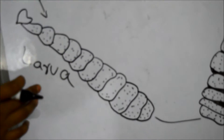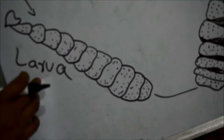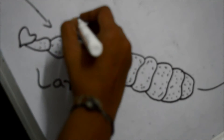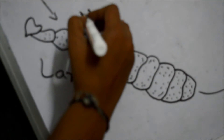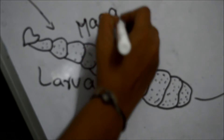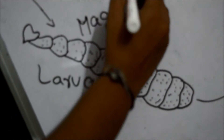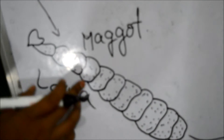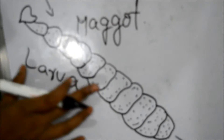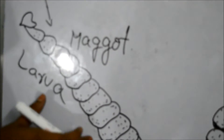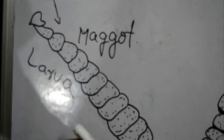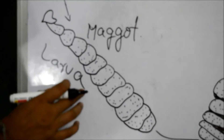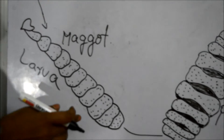Next, let us see the stage of larvae. The larvae is also known as maggot, and it is white in color. The body of the larvae has 13 segments. It has a mouth which feeds on organic matter.